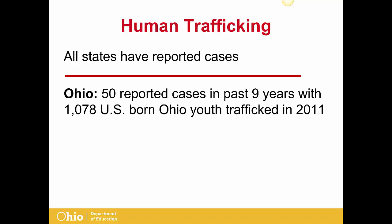Human trafficking is the recruitment, harboring, provision, or obtaining of a person for the purpose of a commercial sex act, in which a commercial sex act is induced by force, fraud, or coercion, and the person forced to perform such act is under the age of 18 years old. All 50 states have reported cases of human trafficking. 200,000 people have been trafficked in the United States, with an estimated 100,000 children involved in sex trafficking. In Ohio, 50 cases have been reported in the past nine years, with 1,078 United States-born Ohio youth sex trafficked in 2011.